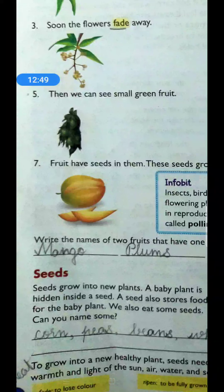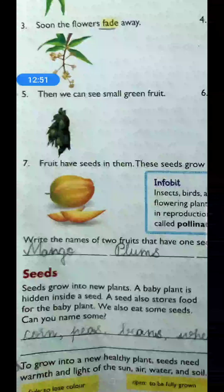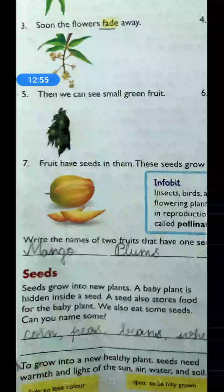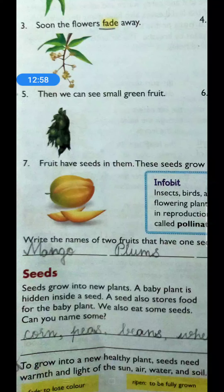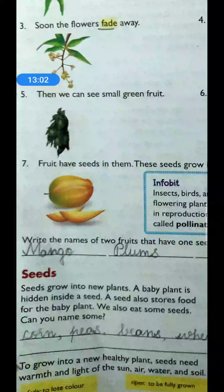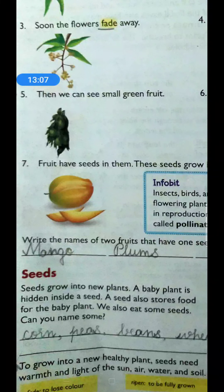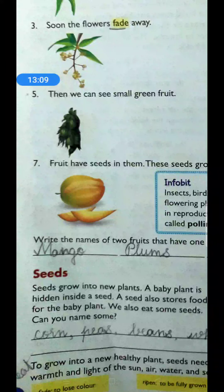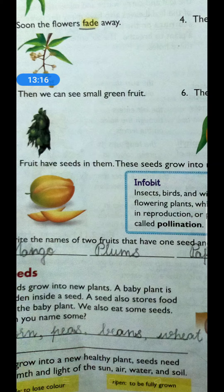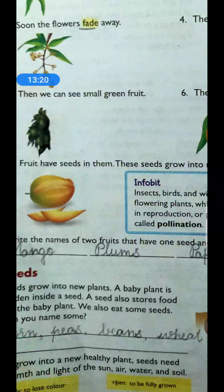To grow into a new healthy plant, we have to give some proper conditions to the seed. What are they? Seeds need: warmth — we need warmth; light of the sun — sunlight is very necessary; air — proper ventilation with air; and water — daily watering. With good soil and these conditions, the seed will grow well.